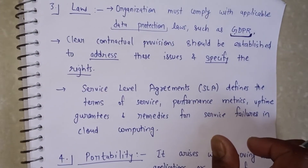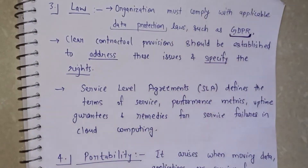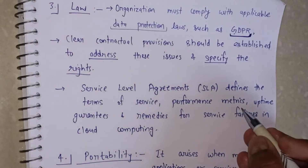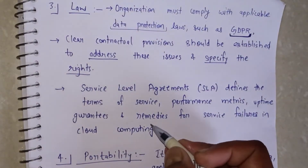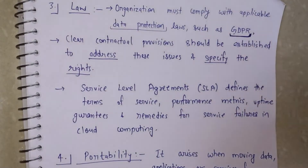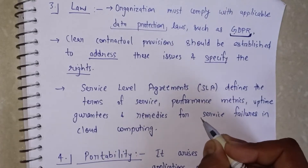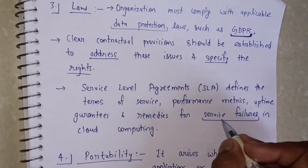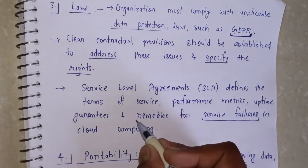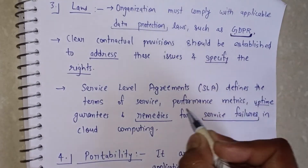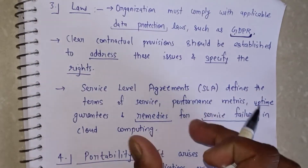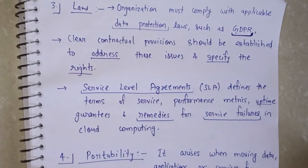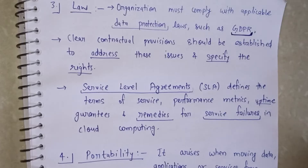Service Level Agreements also help a lot in cloud computing to establish proper restrictions. They define the terms of service, including performance metrics, uptime guarantees, and remedies. Whatever remedy solutions exist for service failures should be specified. If service failures occur, there should be a defined solution, and uptime guarantees and performance details should all be mentioned in the Service Level Agreement.